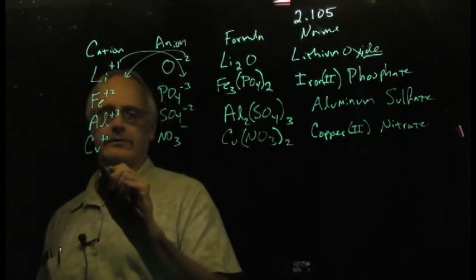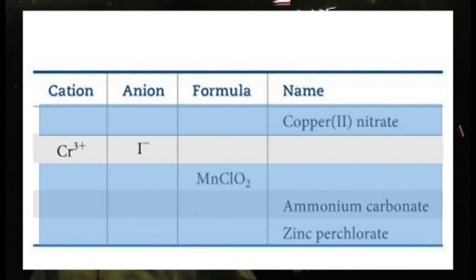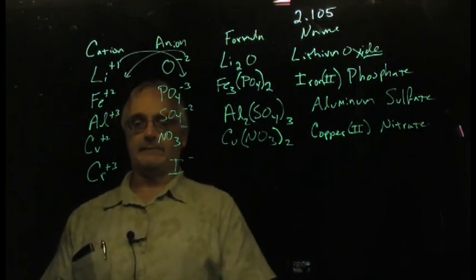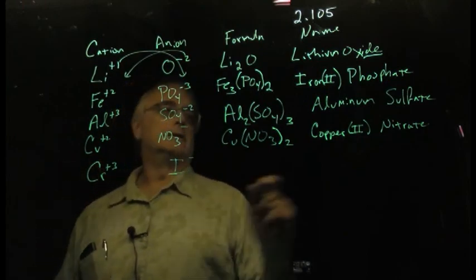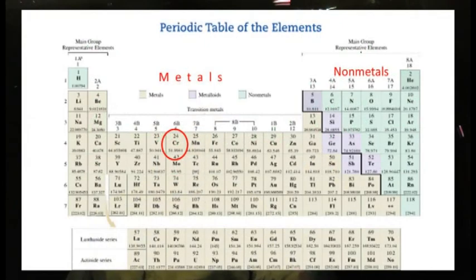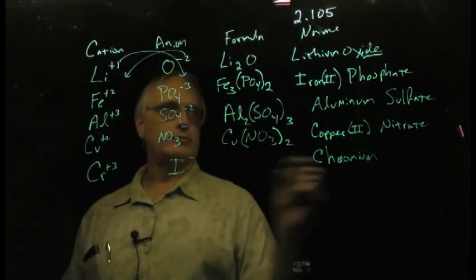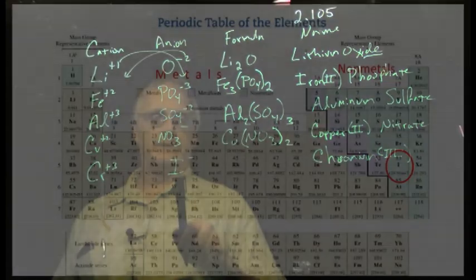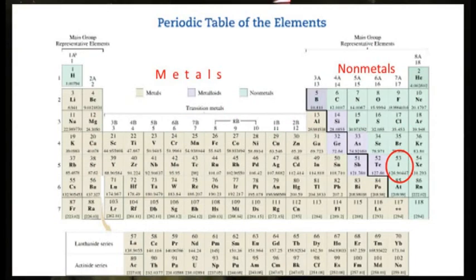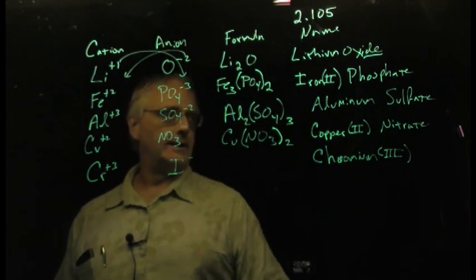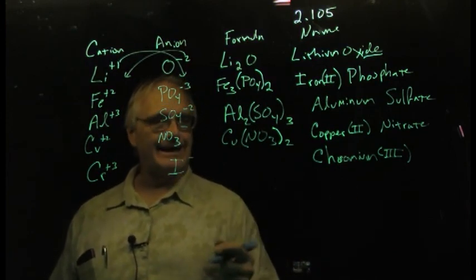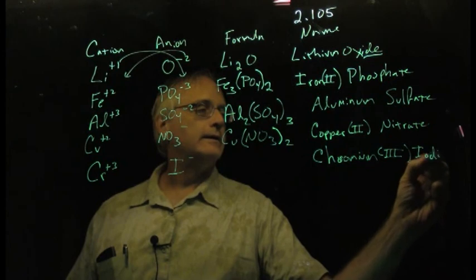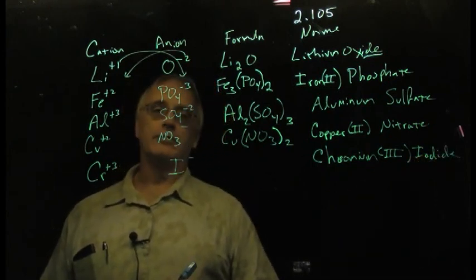Next, they gave us a couple of ions. Cr plus 3, iodide minus. We orient ourselves on the periodic table. We find this thing. That's chromium. Transition metal. Chromium, transition metal, Roman numeral, three. This thing - an element that has formed an ion. Not one of the polyatomics. An element that has formed an ion. I is iodine. So the element, negative ion, is iodide. Chromium-3 iodide.